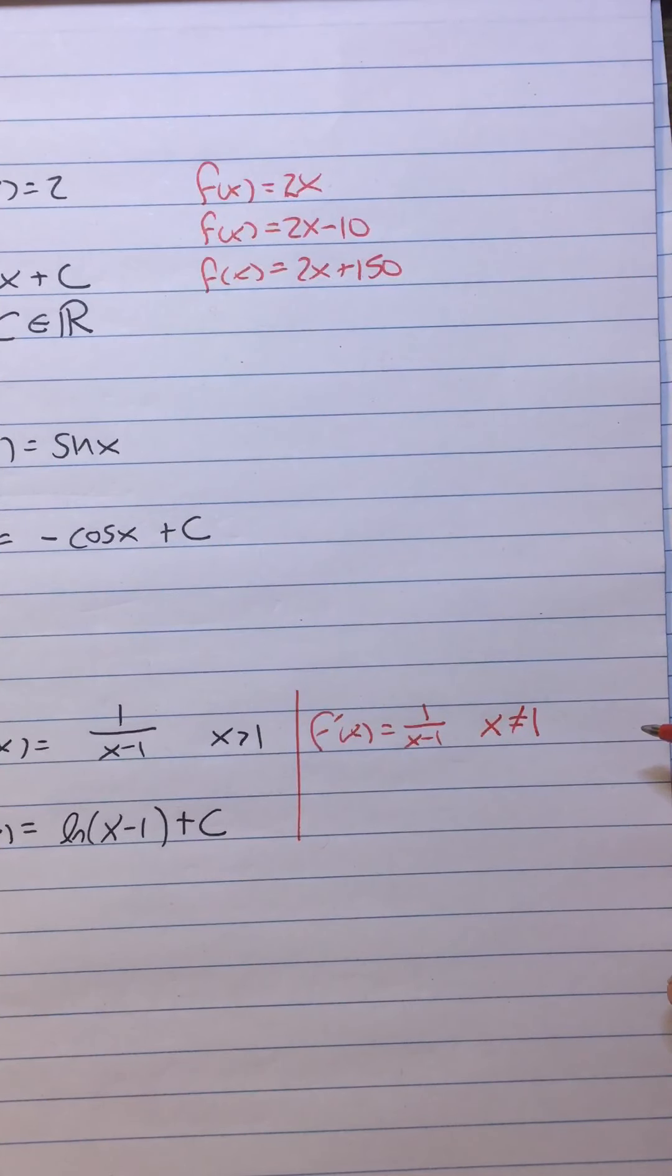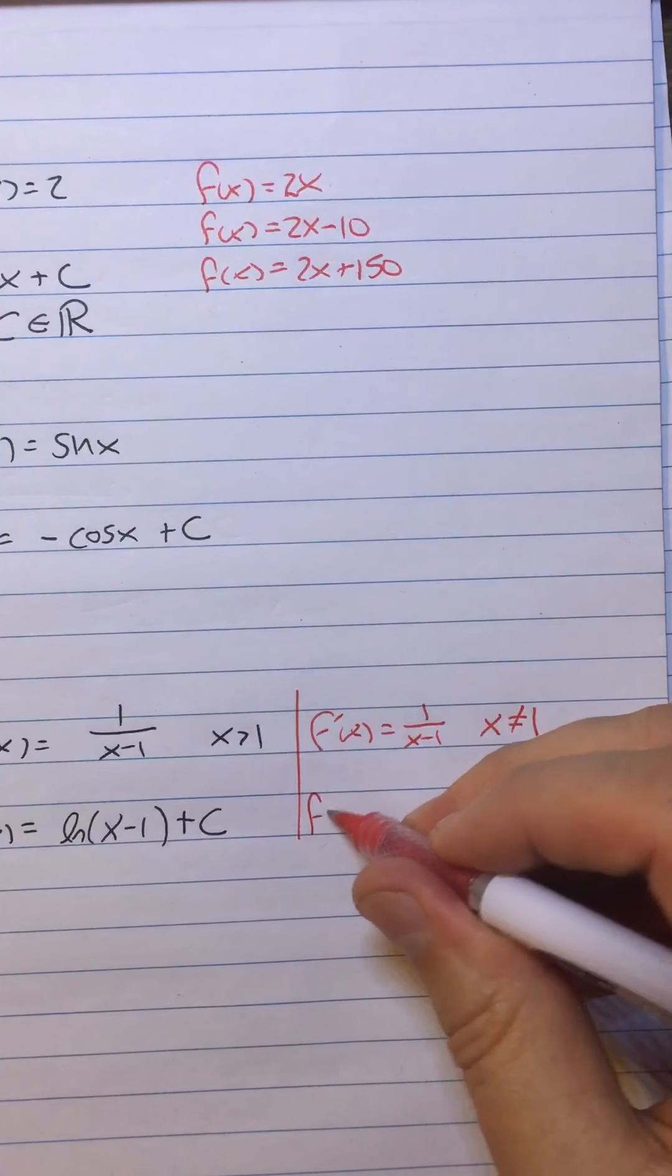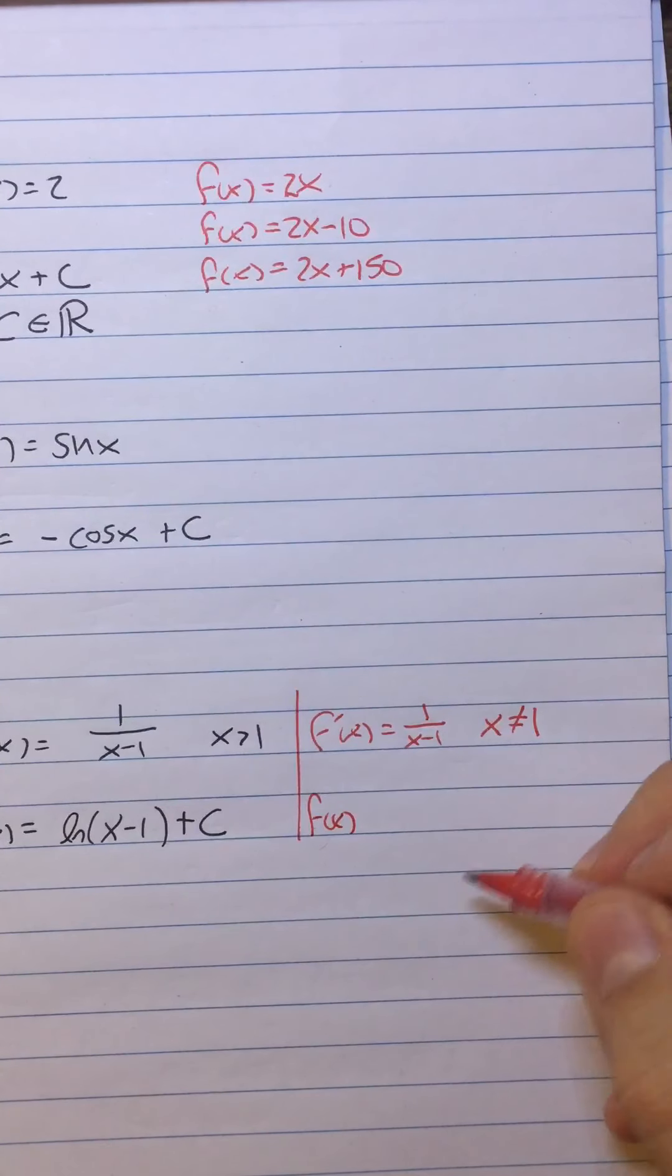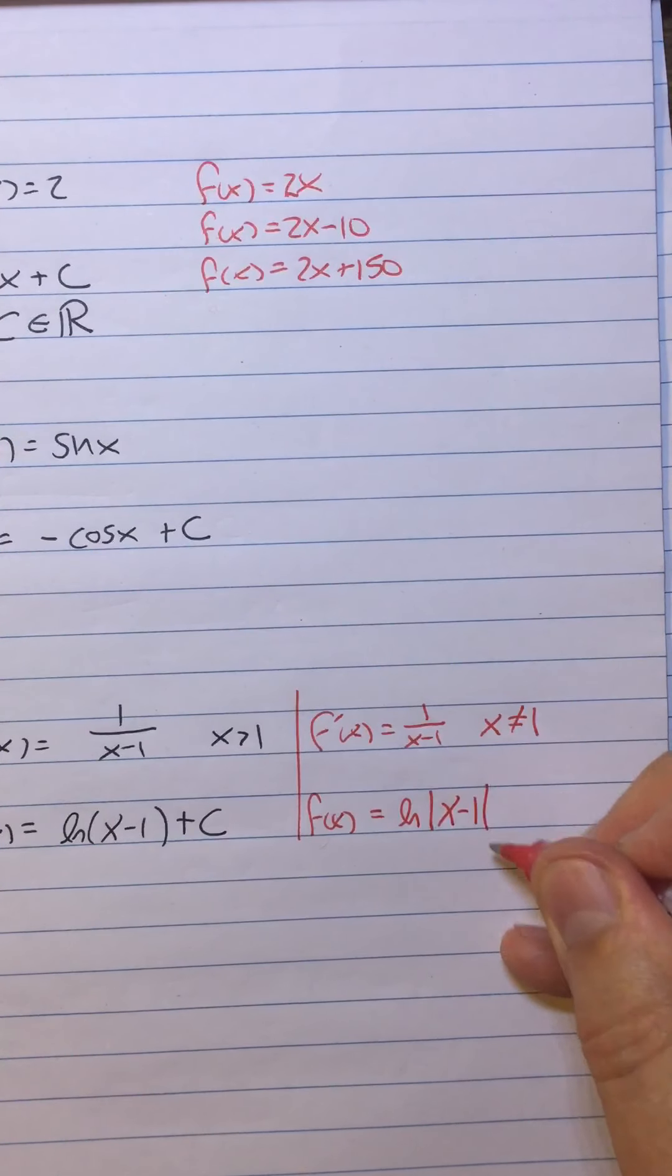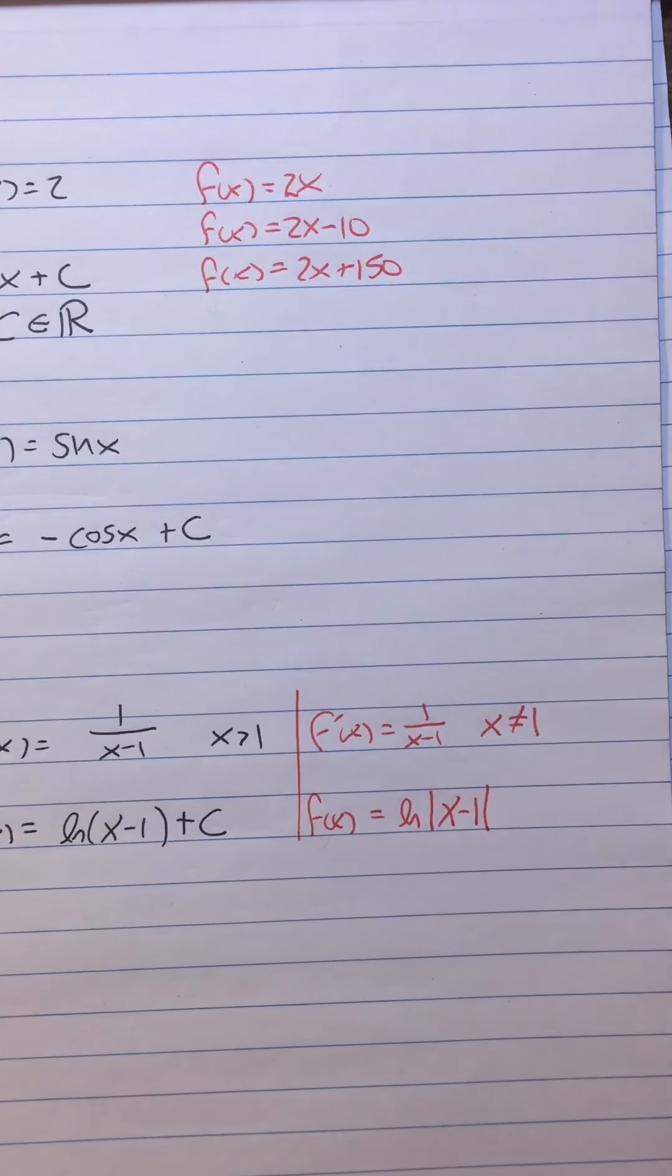Do you remember when we said not just the derivative of ln of x is 1 over x, but the derivative of ln of the absolute value of x is equal to 1 over x? That's what you would do in that case.